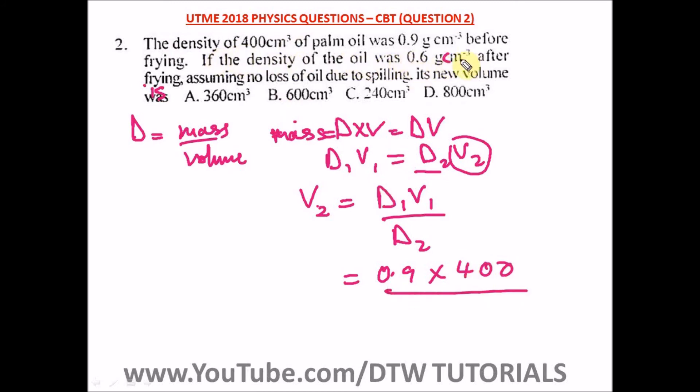if the density of oil was 0.6 after frying. So 0.6. When you're punching your calculator, what are you going to get? When you're punching your calculator these values, you are going to get 600 centimeter cube.